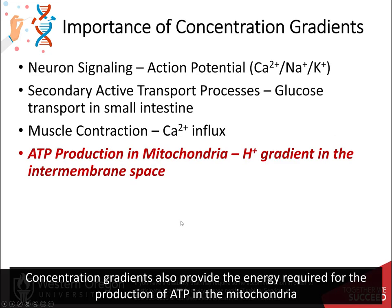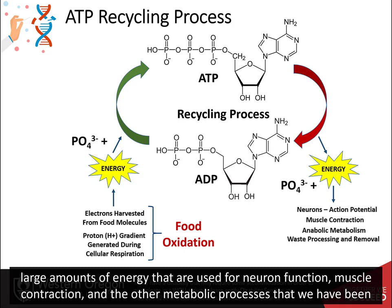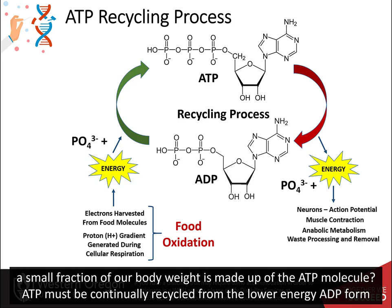Concentration gradients also provide the energy required for the production of ATP in the mitochondria. As we have seen, ATP is the main energy source within the body. Hydrolysis of the high-energy phosphate bonds releases large amounts of energy used for neuron function, muscle contraction, and other metabolic processes. In fact, we essentially use our own body weight in ATP every day — remarkable given that only a small fraction of our body weight is made up of the ATP molecule.